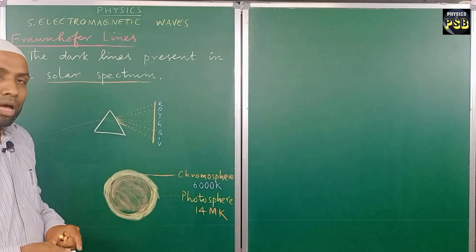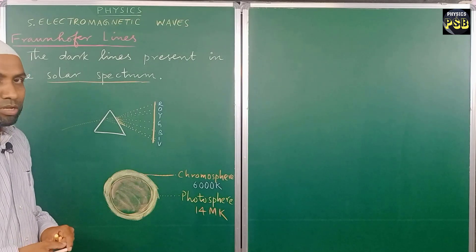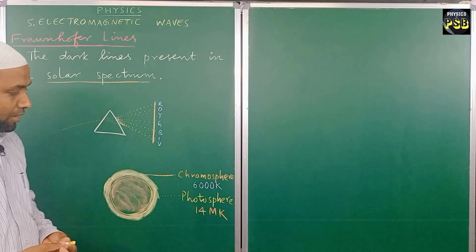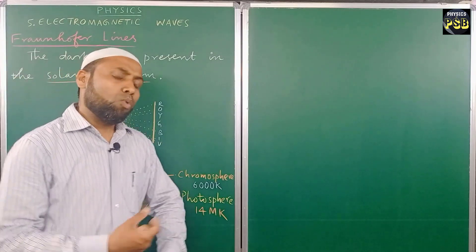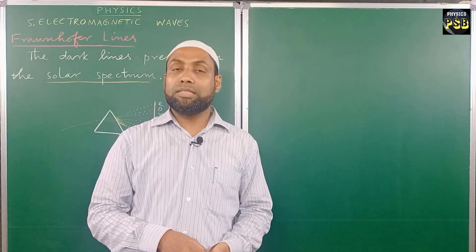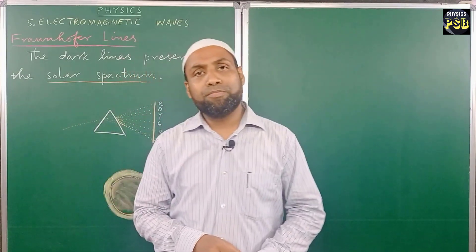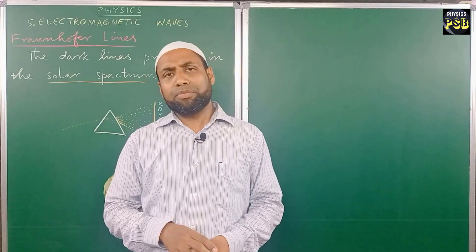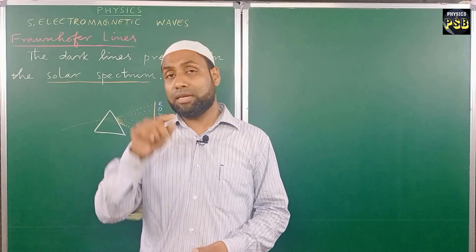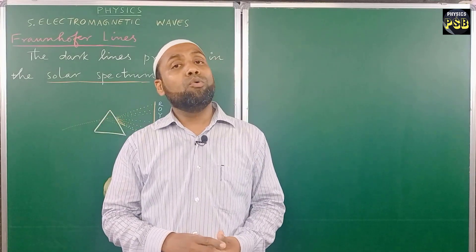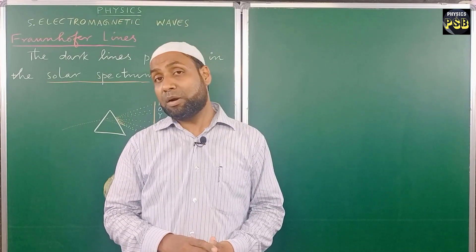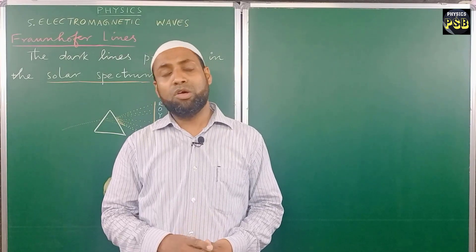Now this is due to the absorption of light from the photosphere by the vapors of those elements present in the sun. So what is the significance of Fraunhofer lines?